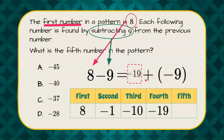Again, we are going to come back up, replace that with negative 19 and add negative 9, and it gives us negative 28 for an answer of D.